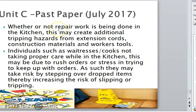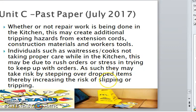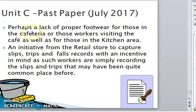If repair work is being done in the kitchen, this may create additional trip hazards from extension cords, construction materials, and workers' tools. Individuals such as waitresses and cooks not taking proper care while in the kitchen — this may be due to rush orders or stress, causing them to step over dropped items and increase the risk of slipping or tripping. A lack of proper footwear for those in the cafeteria, workers visiting the cafe, and those in the kitchen area. Lastly, a new initiative from the retail store to capture slip, trip, and fall records may mean workers are simply now recording incidents that were previously commonplace and unreported.